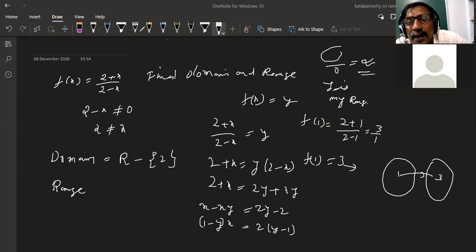Here I have a plus, here I have a minus, so this minus becomes plus. Here I have 1 plus y. Therefore, x equals 2 times (y minus 1) over (y plus 1).